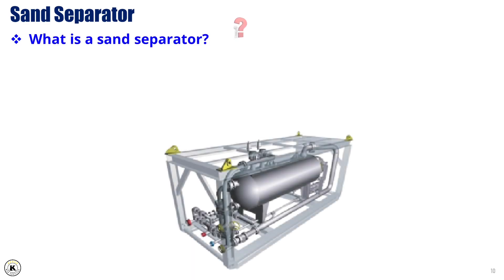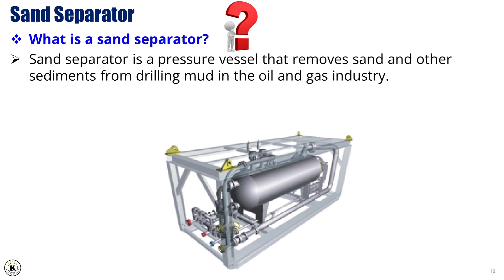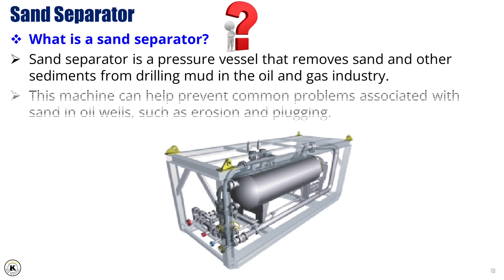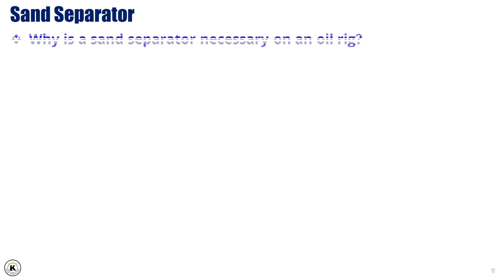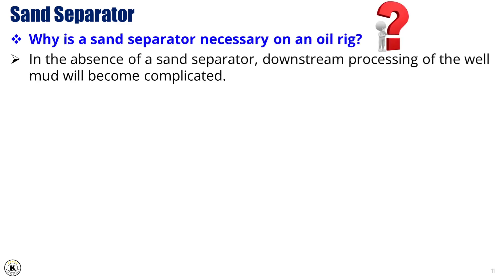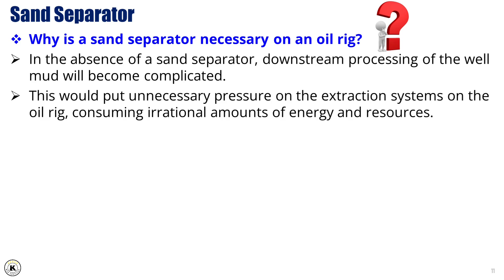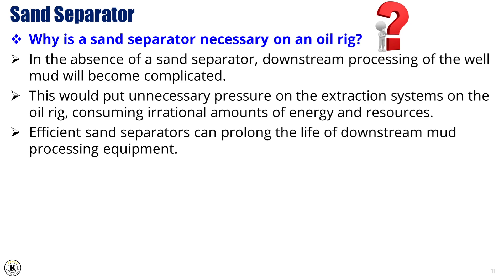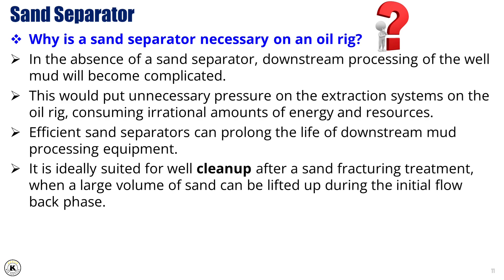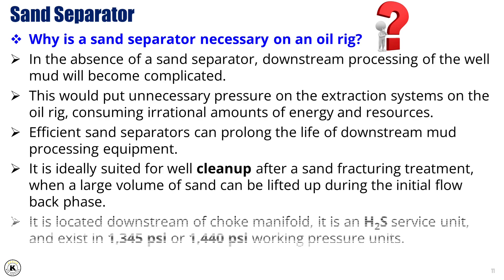Sand separator. A sand separator is a pressure vessel that removes sand and other sediments from drilling mud in the oil and gas industry. It can help prevent common problems associated with sand in oil wells, such as erosion and plugging. In the absence of a sand separator, downstream processing of well mud becomes complicated, putting unnecessary pressure on extraction systems and consuming irrational amounts of energy. It is ideally suited for well cleanup after a sand fracturing treatment, when a large volume of sand can be lifted during the initial flow back phase. It is located downstream of the choke manifold, is an H2S service unit, and exists in 1345 PSI or 1440 PSI working pressure units.